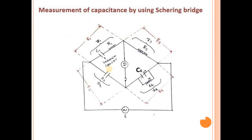Now we will see the measurement of capacitance by Schering Bridge. Here is the bridge circuit: Z1 is connected with R1 and C1, where C1 is the unknown capacitor. Z2 is a pure capacitor C2. Z4 consists of variable capacitance C4 and variable resistance R4. Z3 is connected with R3.